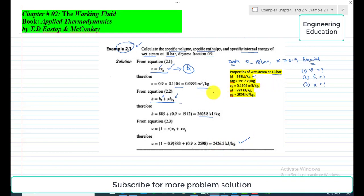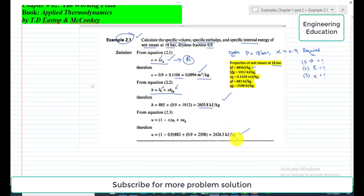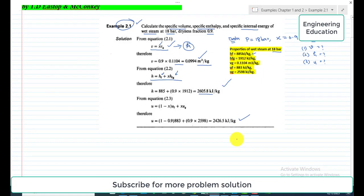So these are the required values: specific volume is 0.0994 cubic meters per kilogram, specific enthalpy h is 2605.8 kilojoules per kilogram, and small u, which is the specific internal energy, is 2426.5 kilojoules per kilogram. This is the overall discussion of Example 2.1.